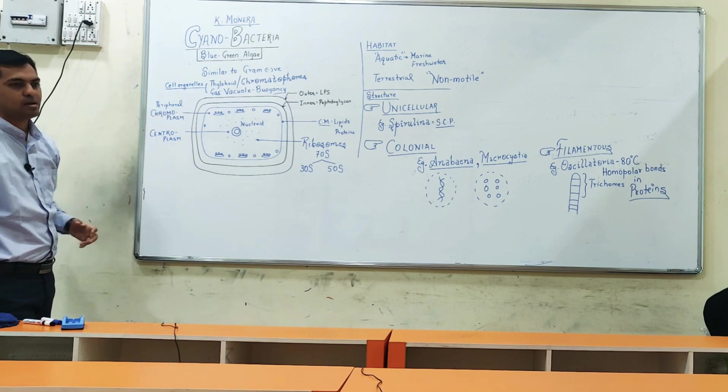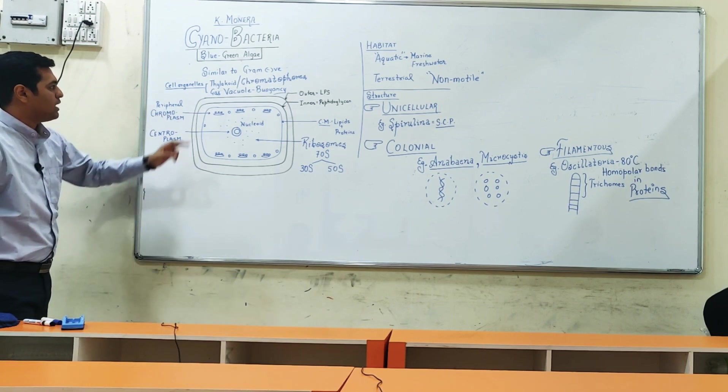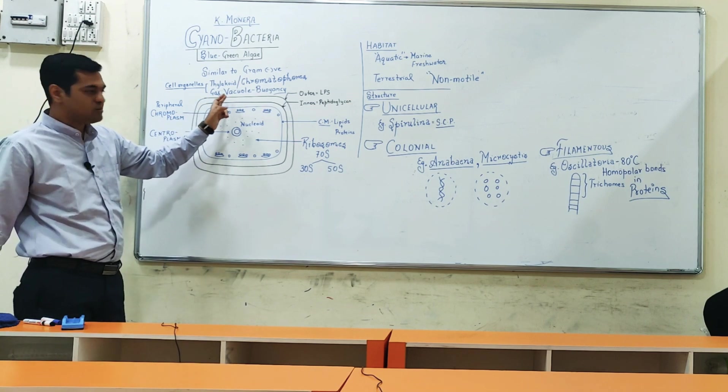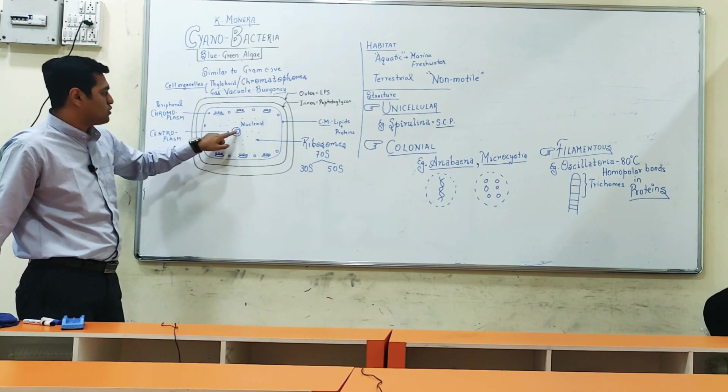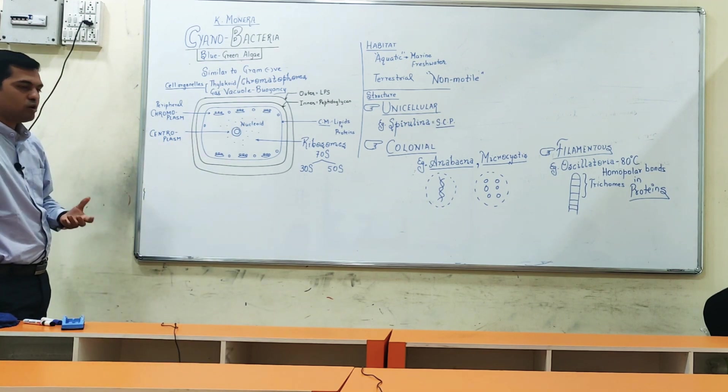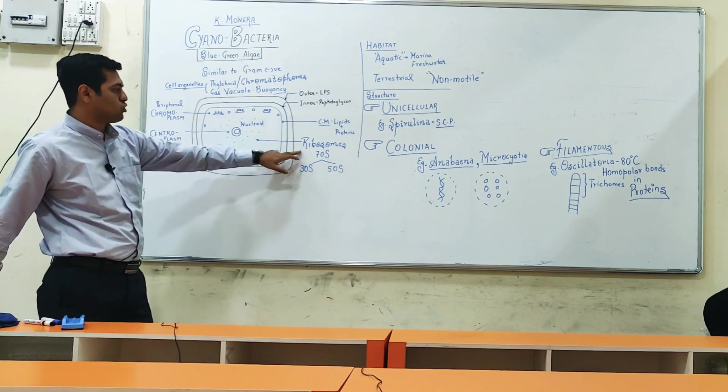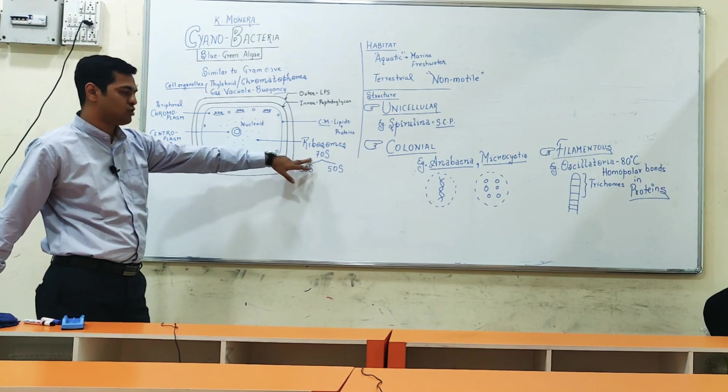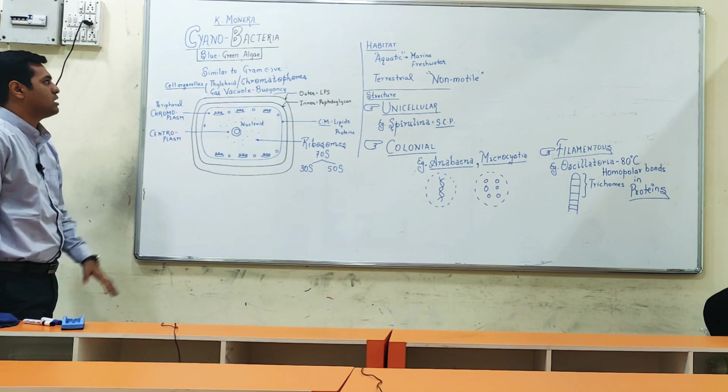And thylakoids have pigments present, that is why it can perform oxygenic photosynthesis. It also has gas vacuoles which provide them with buoyancy. In the centroplasm there will be presence of nucleoid—that is the circular DNA, double-stranded without histone protein, so it is a false chromosome. And there is presence of ribosomes which is of 70S type, that is prokaryotic, made up of two subunits 30S and 50S. So that is about the entire structure of cyanobacteria.